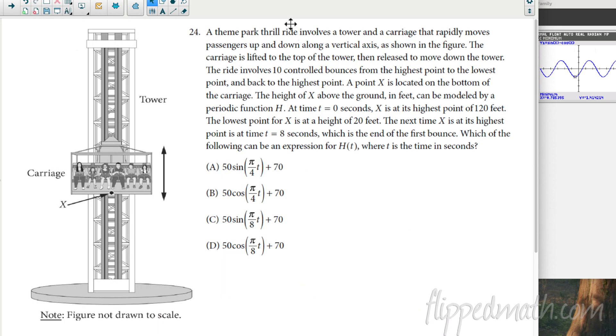And here is the last one that we have. Another trig question. Man, we love our trig. Hope you guys paid attention in unit three here. So let's just read this whole thing. The ride involves 10 controlled bounces. You go up and down. The height of the carriage above the ground in feet can be modeled by periodic function. At time zero, it's at its highest point. That's important. So time zero. So let's just do that. It says zero. I'm going to write that down. Zero. It's at 120 feet. Okay. The lowest point is at a height of 20 feet.